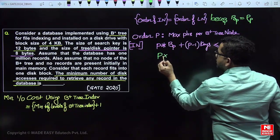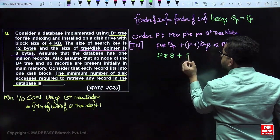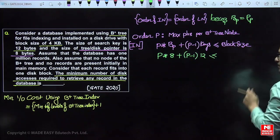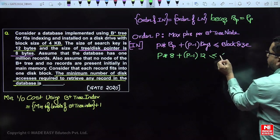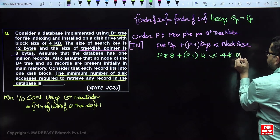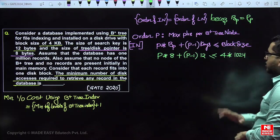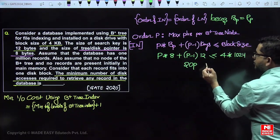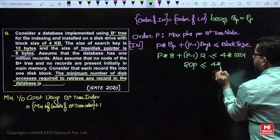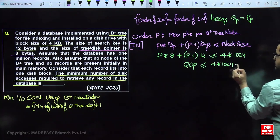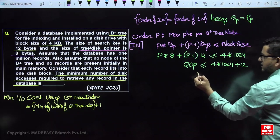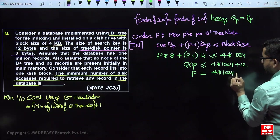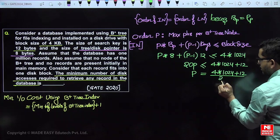So: P × 8 bytes (block pointer size) + (P − 1) × 12 bytes (key size) ≤ 4 kilobytes (block size). Expanding: 8P + 12P − 12 ≤ 4 × 1024, giving 20P ≤ 4096 + 12. Moving the −12 to the right, maximum P = floor((4 × 1024 + 12) / 20).